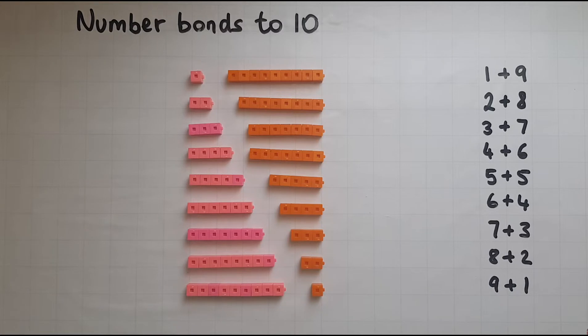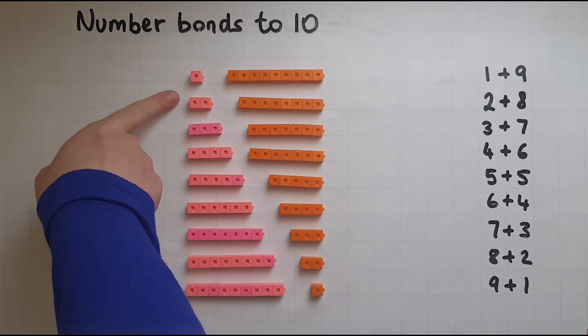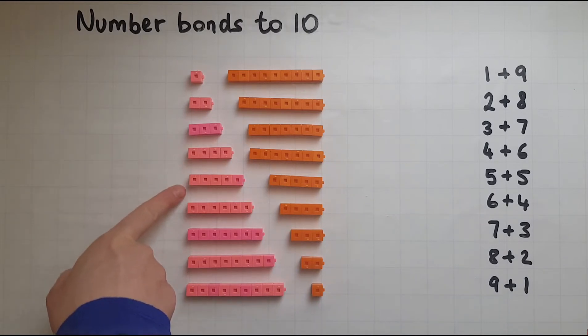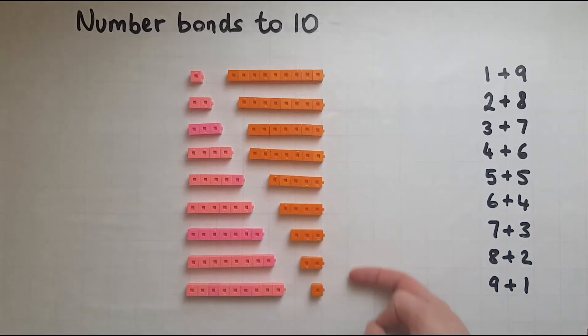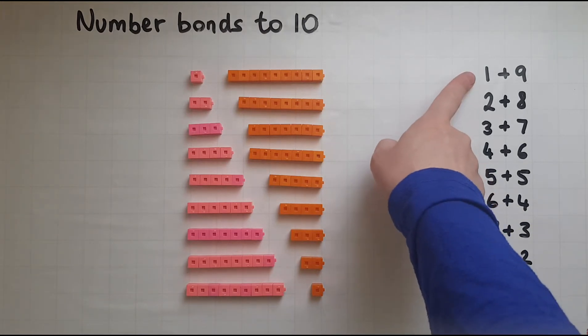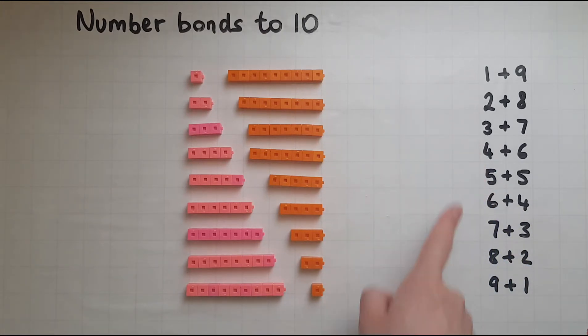So what do you notice in this pattern? The pink cubes get more and more whereas the orange cubes get less and less. So that is reflected in the digits here as well.